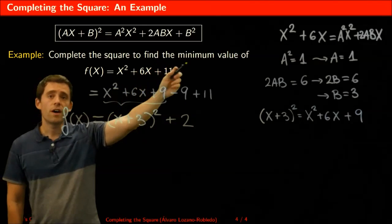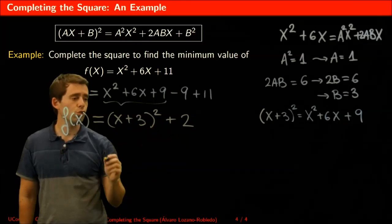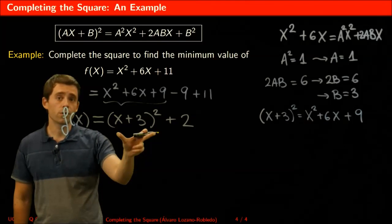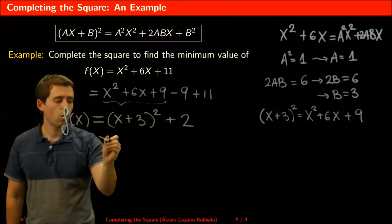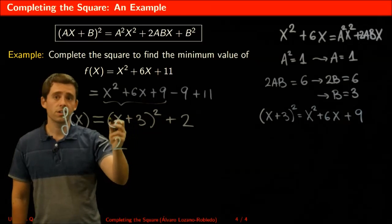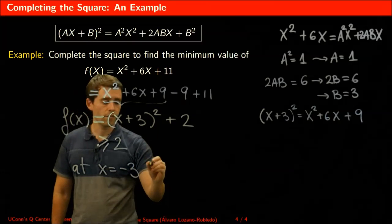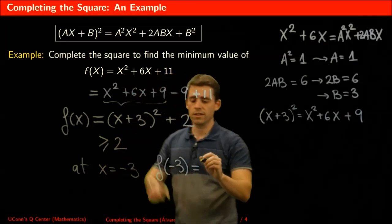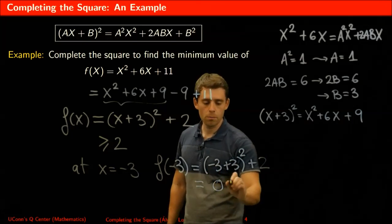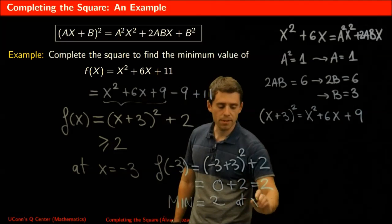Now I want to find the minimum value of the function. The function is always at least 2, because this is a square of a real number, so it's always greater than or equal to 0, plus 2 — so always greater than or equal to 2. I just need to check whether 2 is achievable. I need to make the square term 0, and at x equals minus 3 I have f of minus 3 equals minus 3 plus 3 squared plus 2, which is 0 plus 2 equals 2. So the minimum value is 2, and it happens at x equals minus 3.